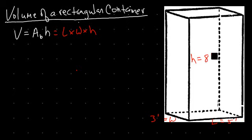and let's say the height is 8 feet, we'd get that the volume of this container is length times width times height, so 5 feet times 3 feet times 8 feet.